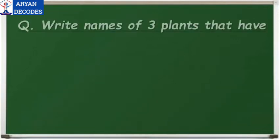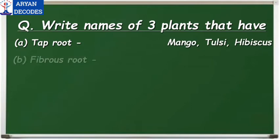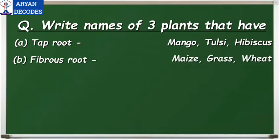Write names of tree plants that have taproot. The answer is mango, tulsi, and hibiscus. Next, fibrous root — the answer is maize, grass, and wheat.